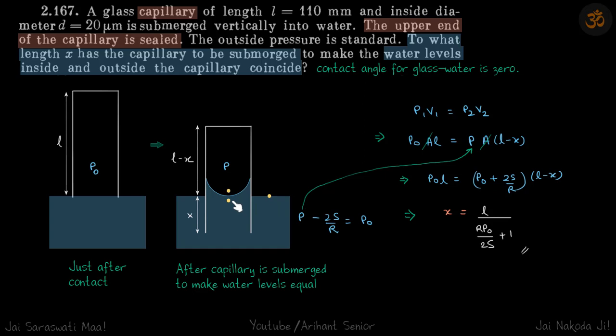to be same as p0, which means that the pressure inside is p0 plus 2s by r. So we know the change in pressure, and because the change in length is given, so we are assuming we need to find